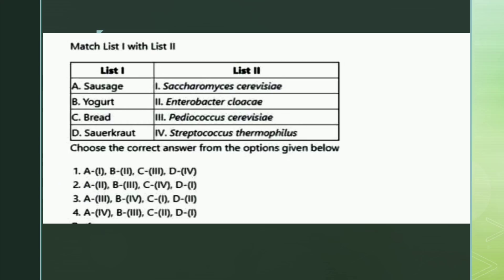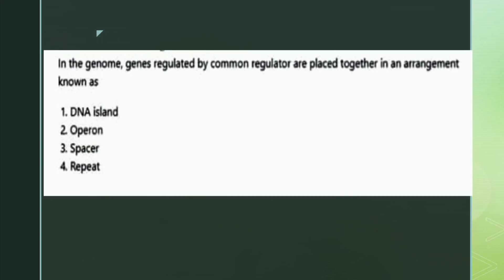The next question: in the genome, genes regulated by a common regulator are placed together in an arrangement known as what? The options are DNA island, operon, spacer, and repeat.